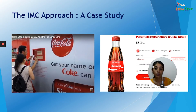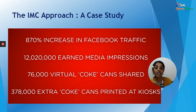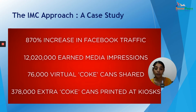This idea became so popular with youths that in Australia alone, there was an 870% increase in Facebook traffic. There were millions of media impressions earned, 76,000 virtual Coke cans shared, and 378,000 extra Coke cans printed at live kiosks. This was a globally successful campaign in Singapore, Australia, and India. Share a Coke became an example of integrated marketing communications done right — where you combine advertisements, social media, campaigning, exhibits, and real-time engagement with your audiences.